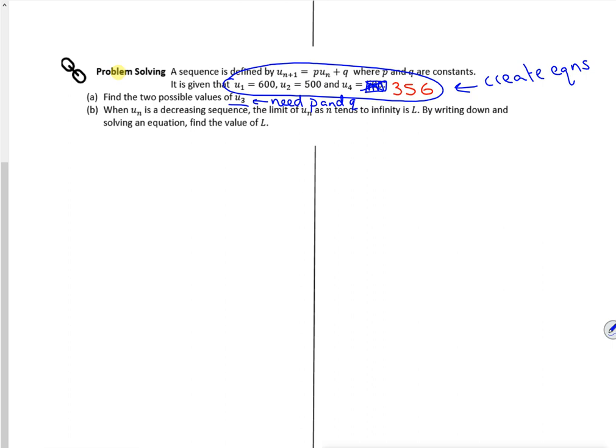So let's write down what we've got there. So I know that u2 will be p lots of u1 plus q. So that information gives me 500 is 600p plus q. So that's one equation we've got.